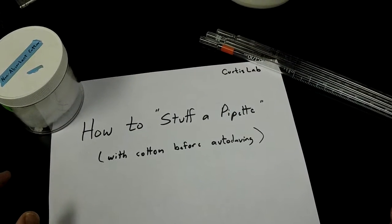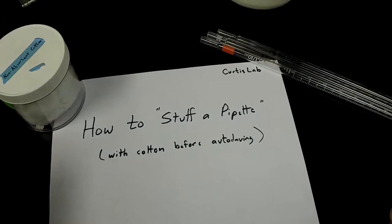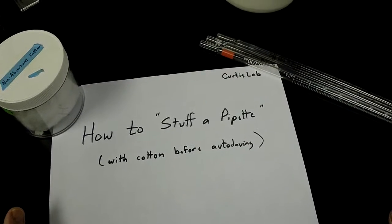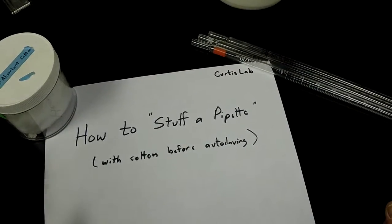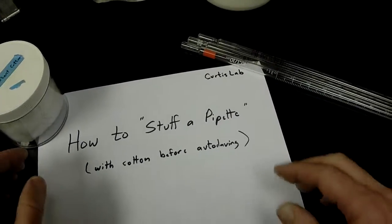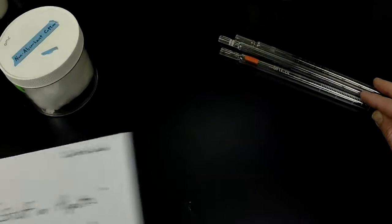Today's activity is one of those mundane lab activities that's often done wrong: simply how to stuff a pipette. If you're going to autoclave them and use them for sterile liquid handling, you'll want to do this correctly.